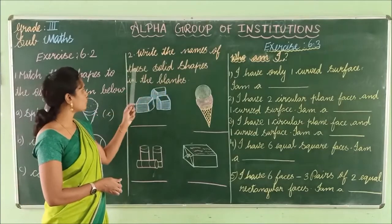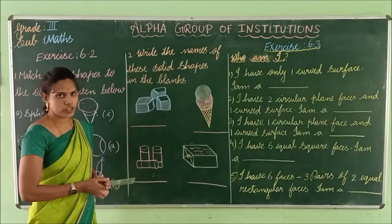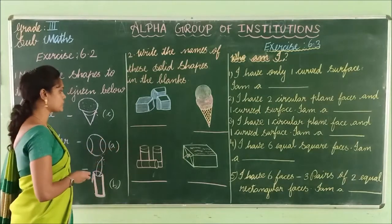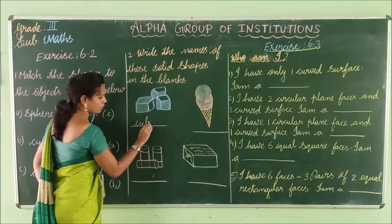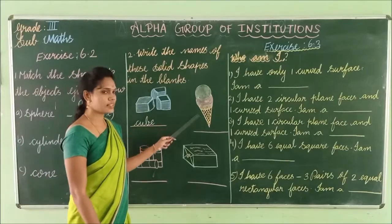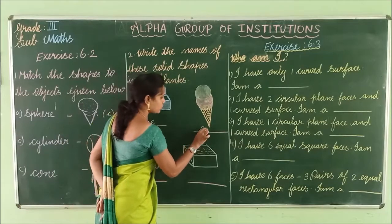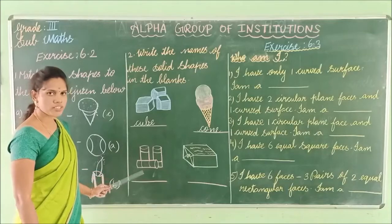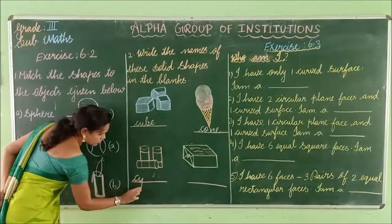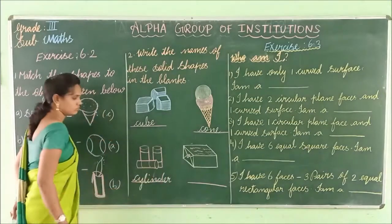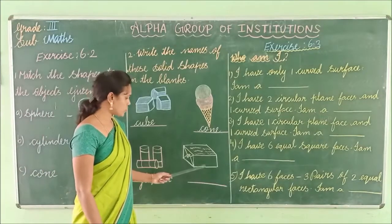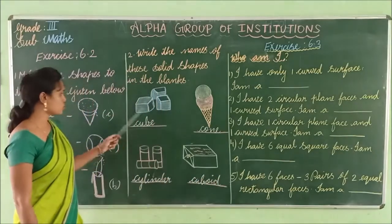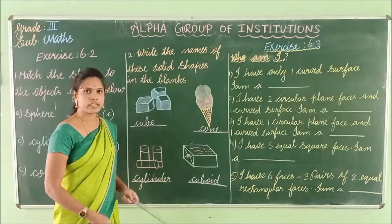Next: write the names of these solid shapes in the blanks. Find out the name of the solid shape. The first one is ice cubes — it is in the shape of a cube. Next is ice cream — it is in the shape of a cone. Next, some object — what is the shape? It is a cylinder. And the next one looks like a gift box — the shape of the gift box is cuboid.